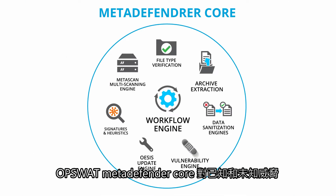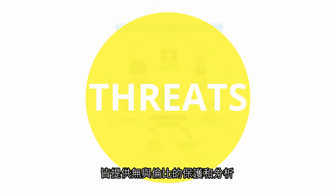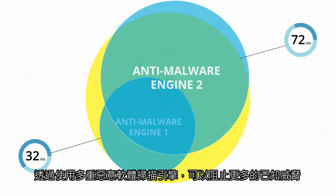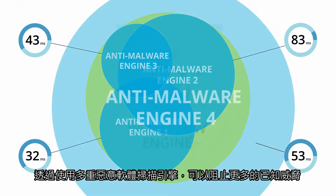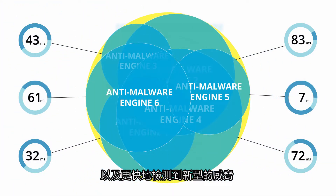OpSwap MetaDefender Core offers unmatched protection and analysis of both known and unknown threats. By using multiple anti-malware engines, more known threats can be blocked and new outbreaks are detected faster.